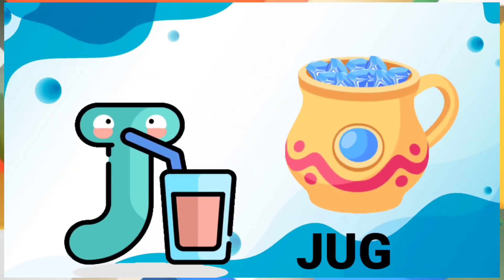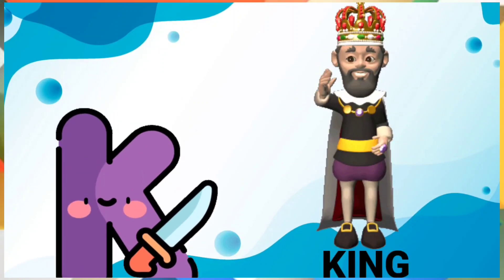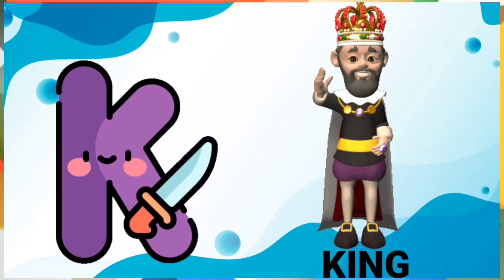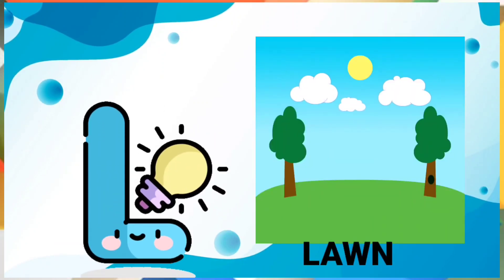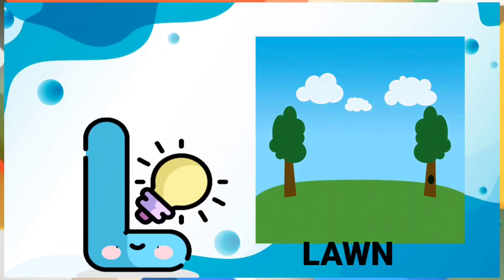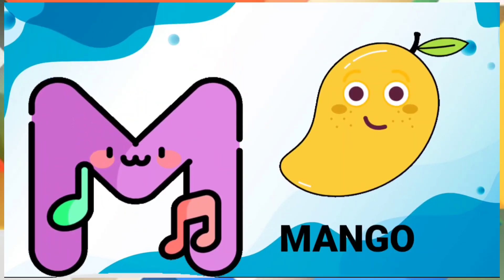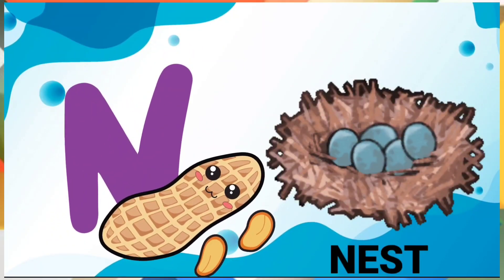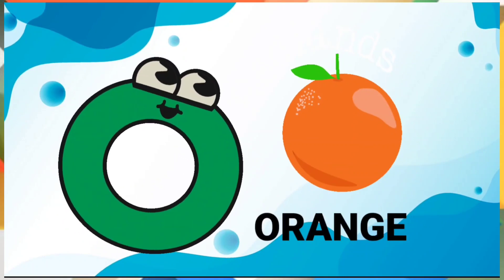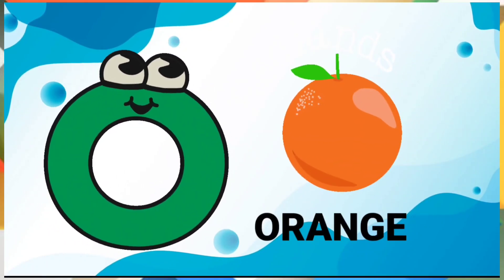J for duck, K for king, L for lark, M for mango, N for nest, O for orange.